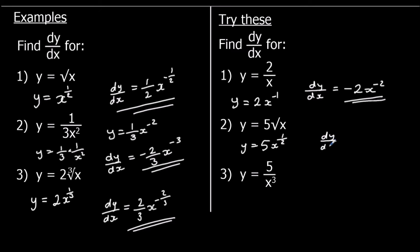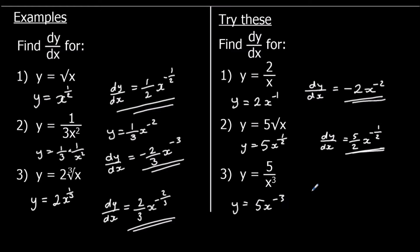Five times the square root of x is the same as five x to the power of a half. So dy/dx: we times by the power to get five halves — you can also write that as 2.5, both are correct — and we've got x to the power of a half take away one, which is minus a half. Question three: five over x cubed is the same as five x to the power of negative three, so we times by the power — negative three times five is negative fifteen — and take one off the power, negative three take away one is negative four.